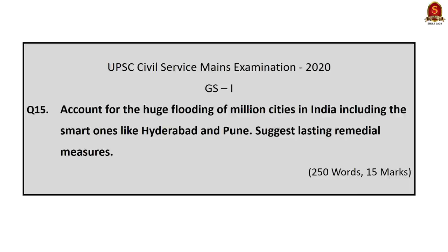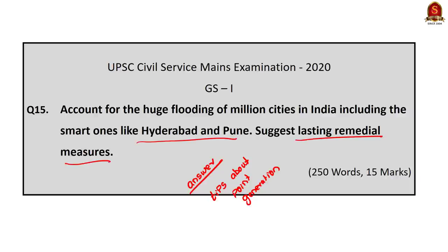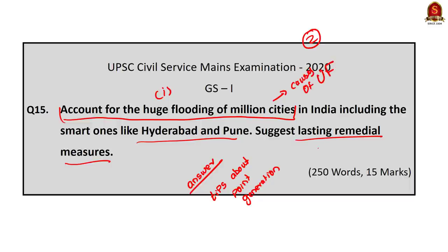Now moving on to the next question. In this question, I won't be discussing the answer precisely. Instead, I will give you tips about how to generate points and how to structure your answer. The question is: Account for the huge flooding of million cities in India, including smart ones like Hyderabad and Pune. Suggest lasting remedial measures. This question has two parts: first, account for the causes of urban flooding; second, suggest lasting remedial measures to mitigate it.